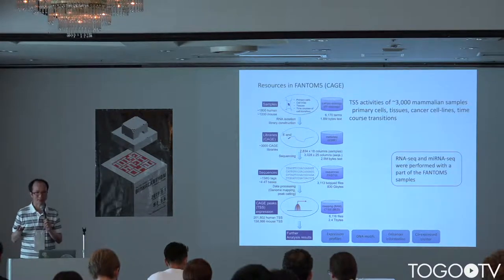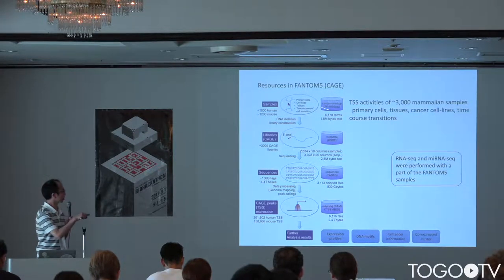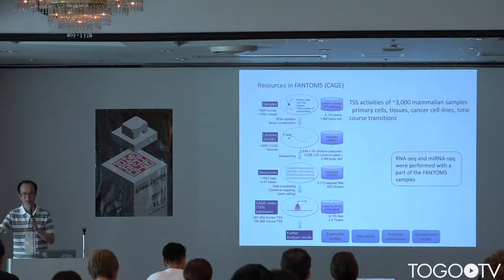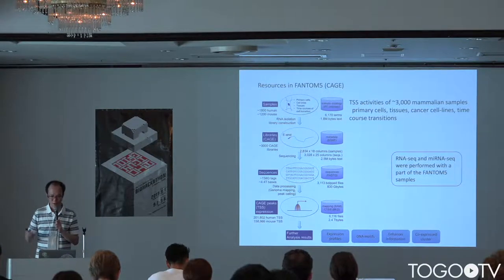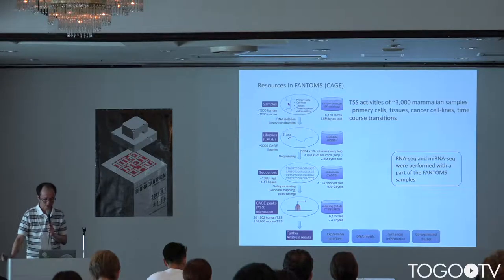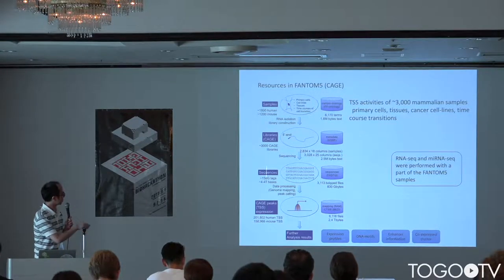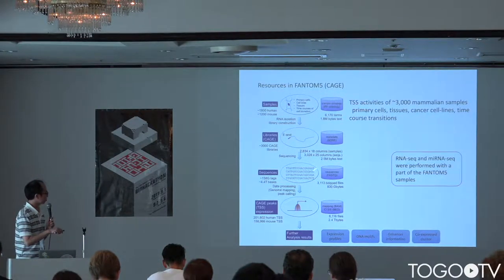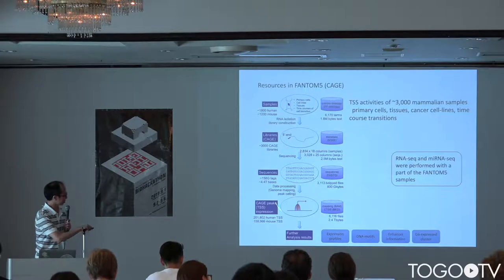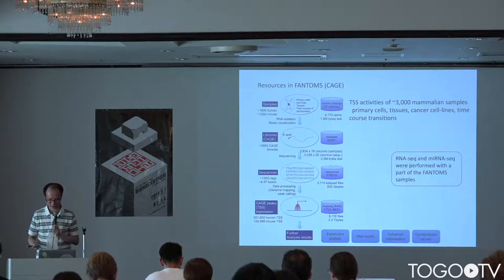We have 3,000 samples with detailed metadata. We developed a new ontology named FF ontology, which is integrated with the Cell Ontology and other ontologies. We added new nodes to describe the 3,000 samples and made an application ontology. According to the data processing pipeline, we produced metadata for library construction, sequencing methods, sequence files, FASTQ processed data, and analysis results.